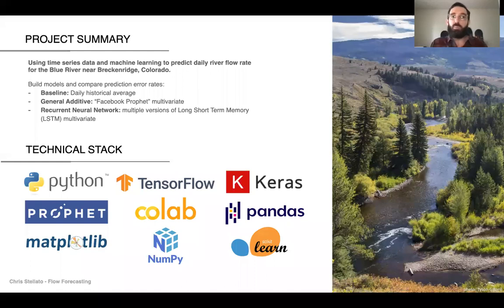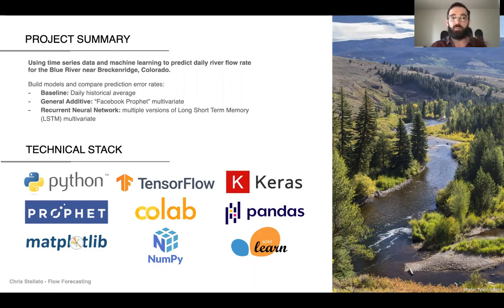For my project, I focused on the Blue River near Breckenridge, Colorado, and I built two different types of models: a Facebook Prophet model and multiple versions of a recurrent neural network long short-term memory model. You can see the technical stack used in the project here, and the model training was done with GPUs on Google Colab.